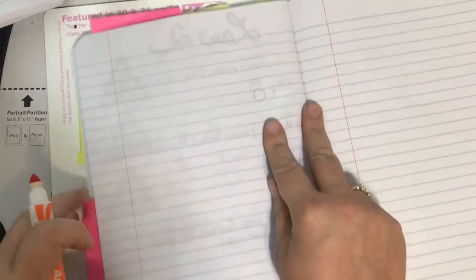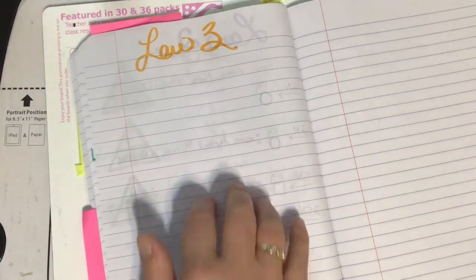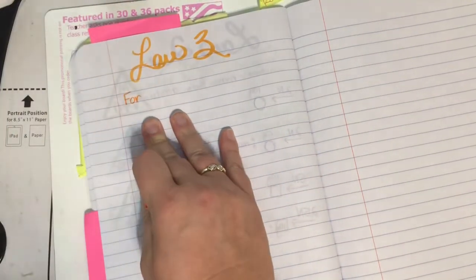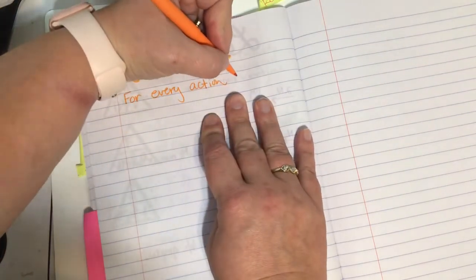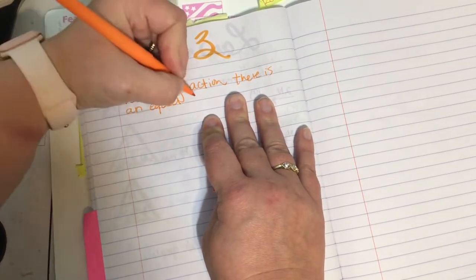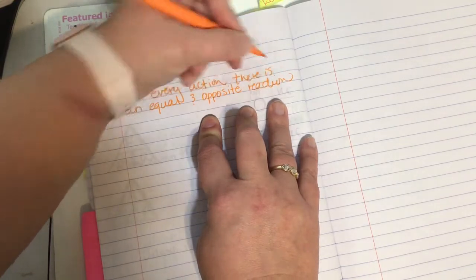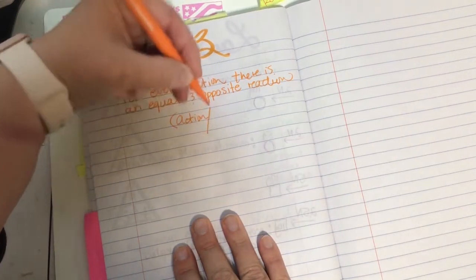Let's talk now about Newton's third law of motion. So we're going to label this page now law three. And this law says for every action, there is an equal and opposite reaction. For every action, there is an equal and opposite reaction. And we can summarize this by saying action, reaction.